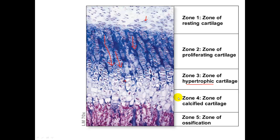In Zone 4, the zone of calcified cartilage, it is only composed of two to three layers of chondrocytes. Minerals begin to be deposited between the columns of lacunae, and as these minerals are deposited, they destroy the chondrocytes, which leads to Zone 5, the zone of ossification.